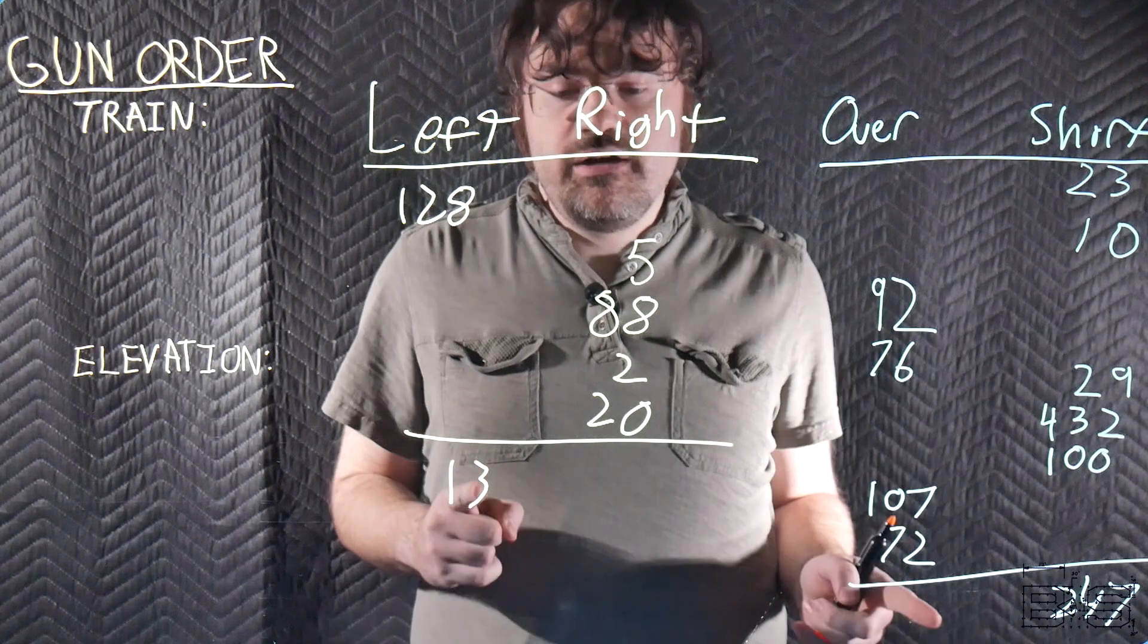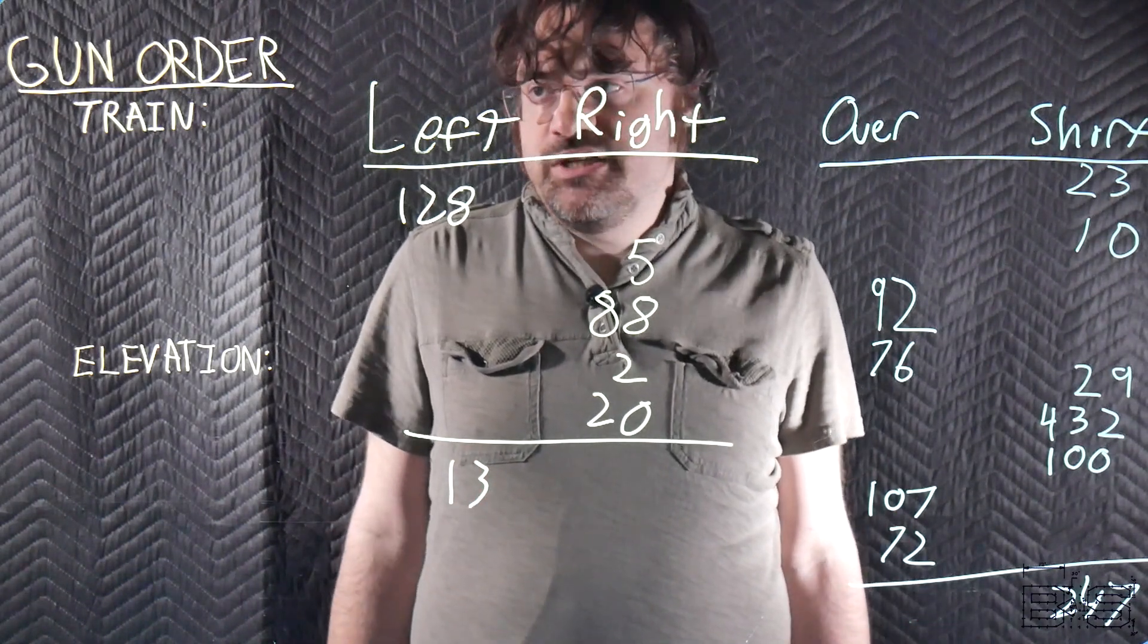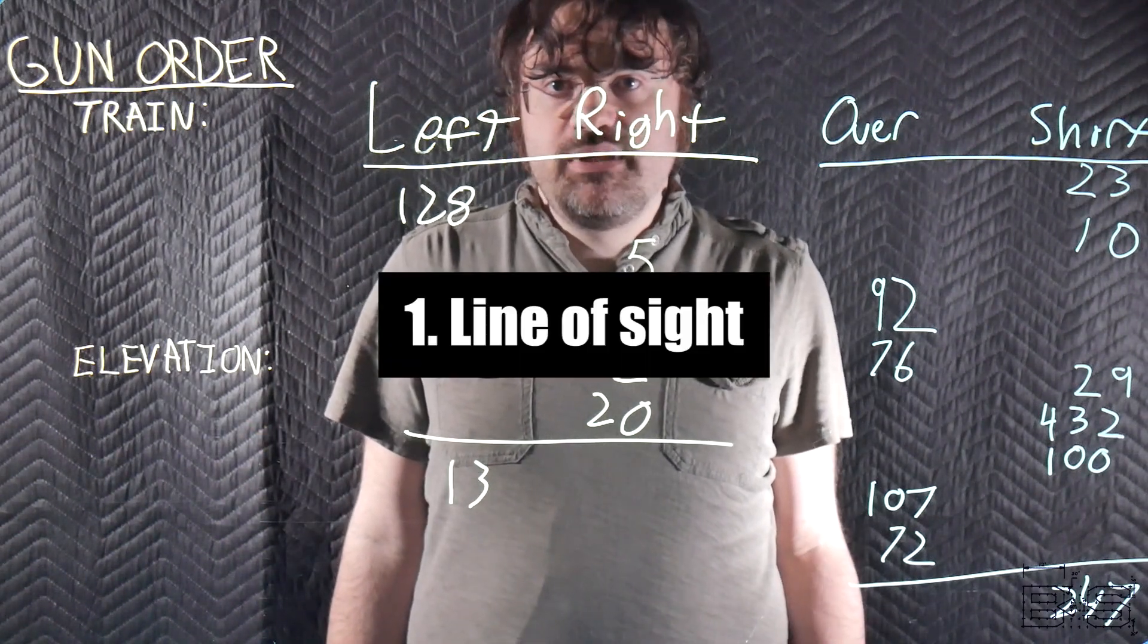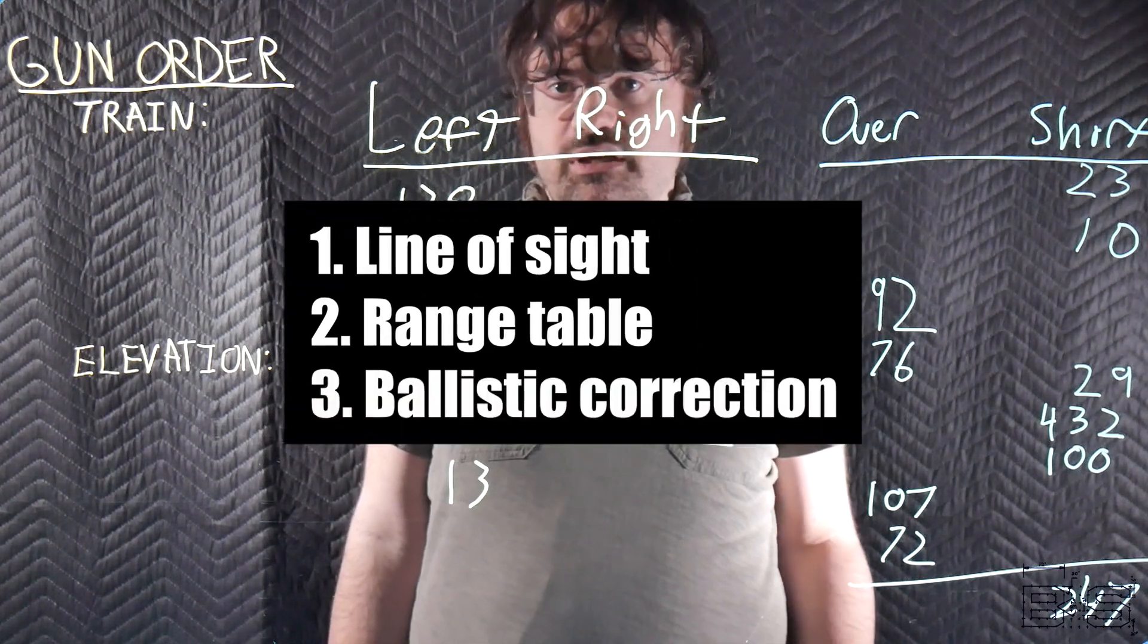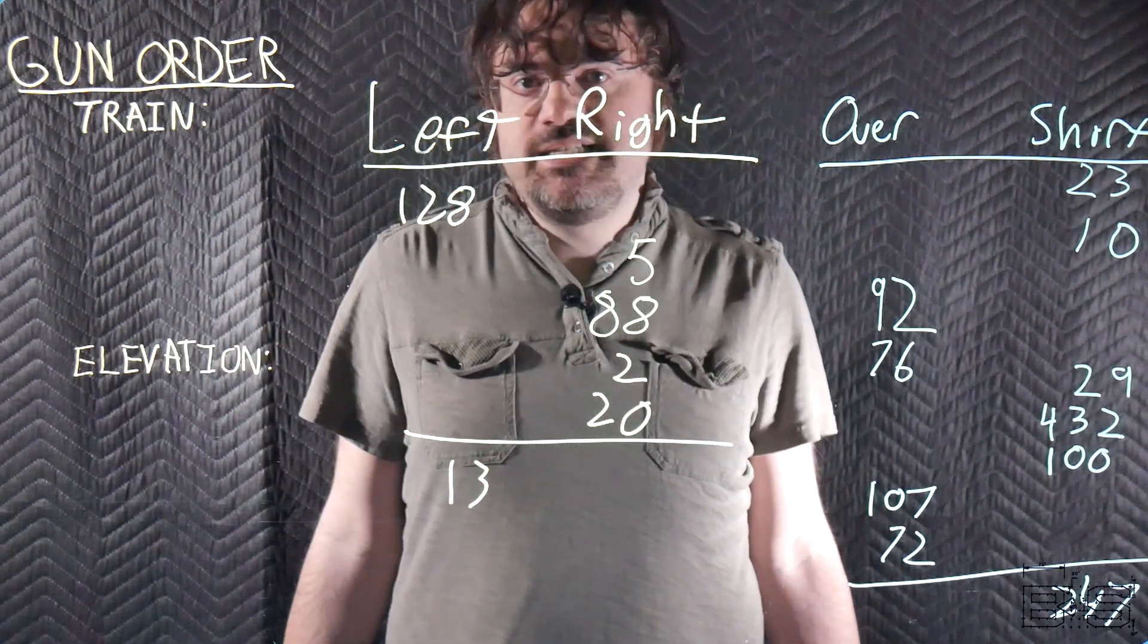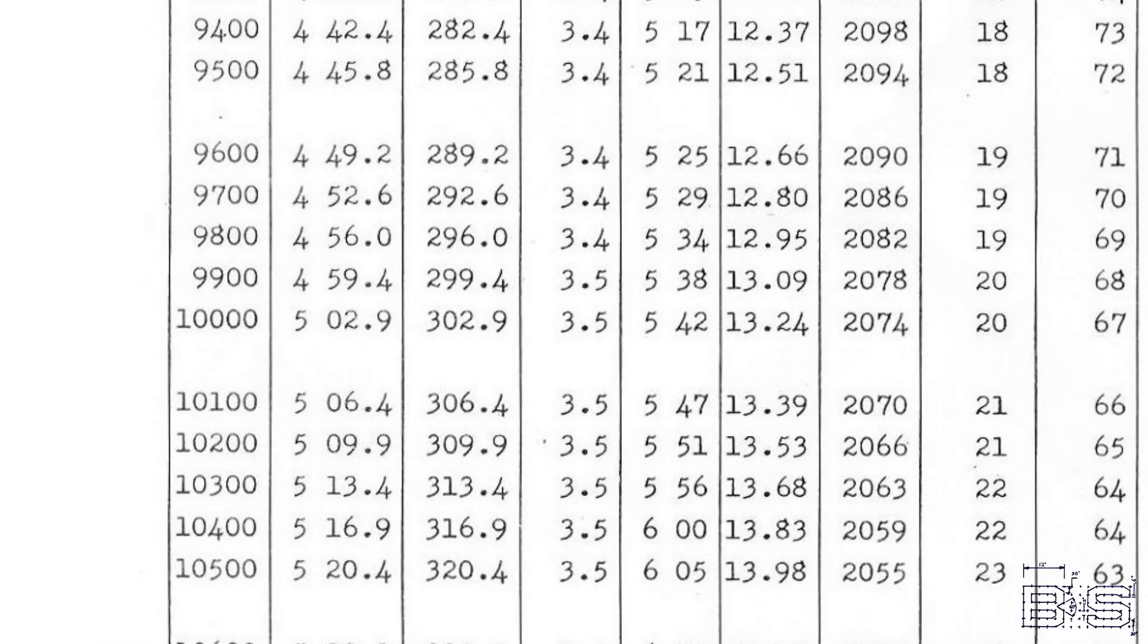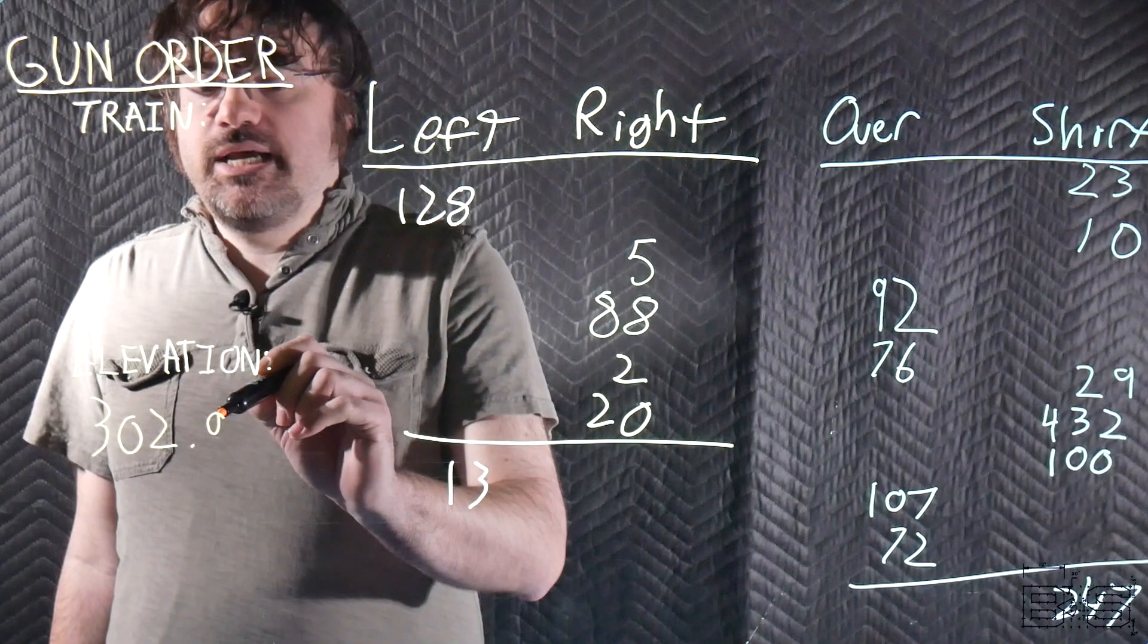So now we have our errors but what do we do about them? The only control we have over the trajectory is training and elevating the guns. The guns are laid based off of the line of sight, the range table data, and the ballistic correction. For our purposes the line of sight is parallel to the horizontal plane because we can't see the target. But we know where it is.